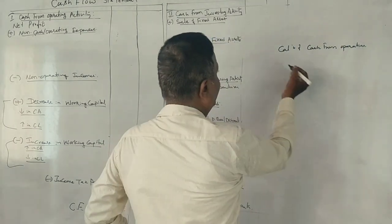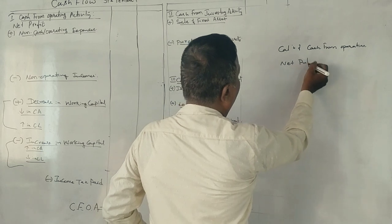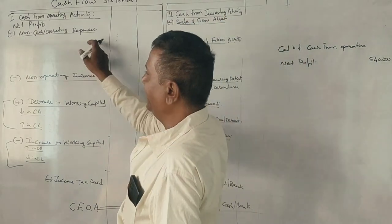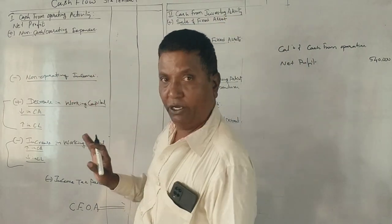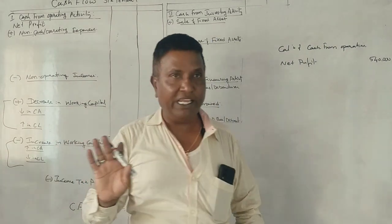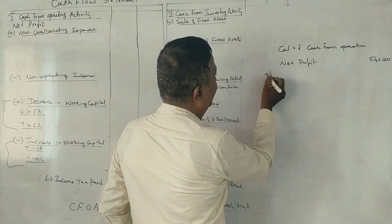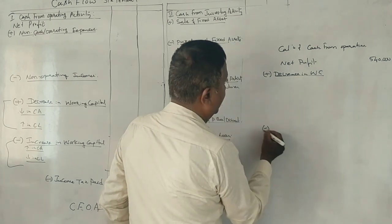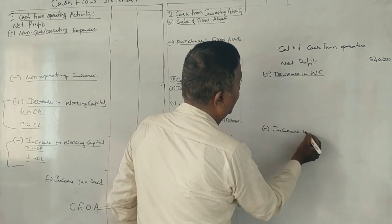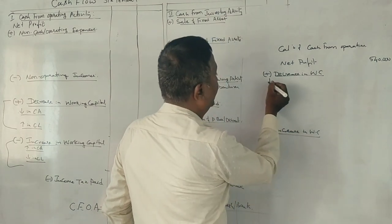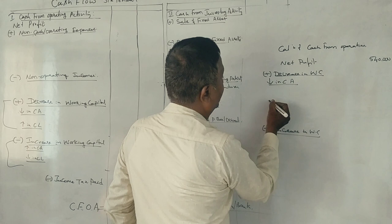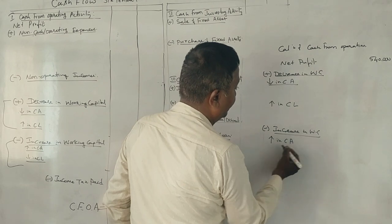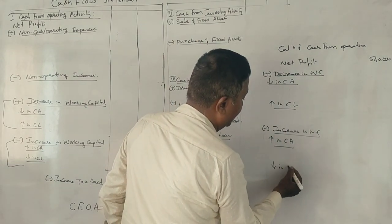First, start with net profit of 5,40,000. Then adjust for non-cash and non-operating expenses and income. Next, adjust for changes in working capital: add decrease in working capital, subtract increase in working capital. This means add decrease in current assets and increase in current liabilities. Subtract increase in current assets and decrease in current liabilities.